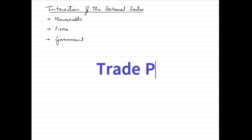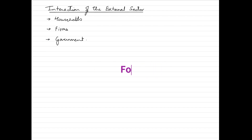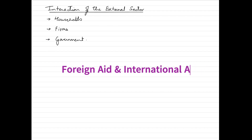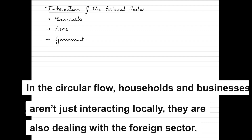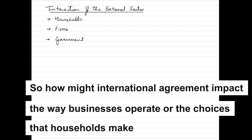The government interacts with the foreign sector in multiple ways, such as taking decisions with regard to trade policies, foreign aid, and international agreements. After you finish the video, try answering this question: in the circular flow, households and businesses are also dealing with the foreign sector — so how might international agreements impact the way businesses operate or the choices that households make?